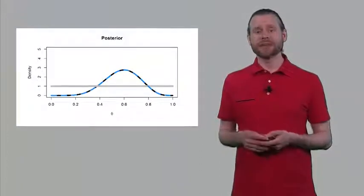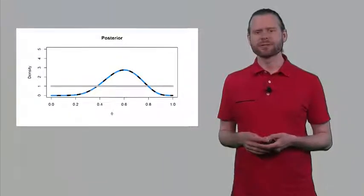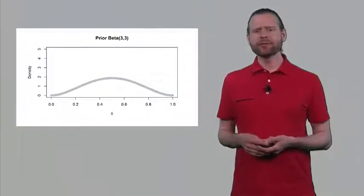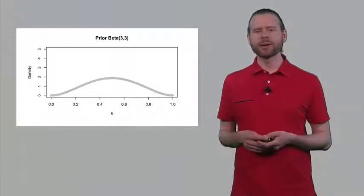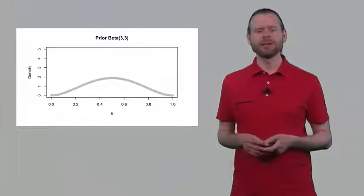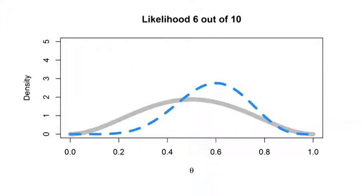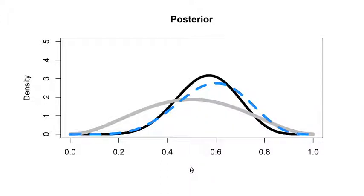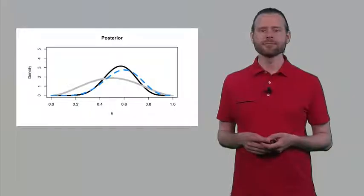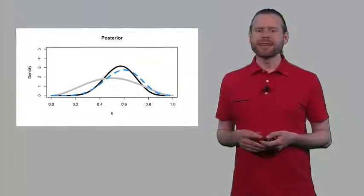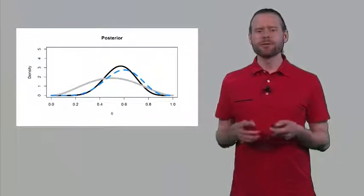Let's take another example where the prior does influence the posterior distribution. Here we have some belief that the coin is probably fair — values around 0.5 are somewhat more likely — but we don't have a very strong conviction. We again observe the same data: we flip the coin 10 times and 6 out of 10 the coin lands heads, so this is exactly the same likelihood function. But we have a slightly different prior. Combining our prior belief with the observed data yields a posterior distribution that is slightly shrinking towards the prior belief that we held.